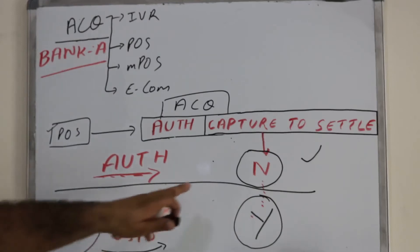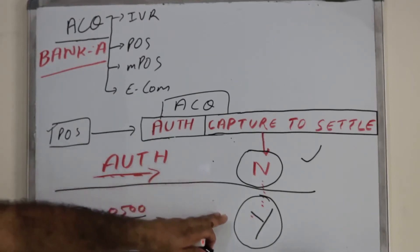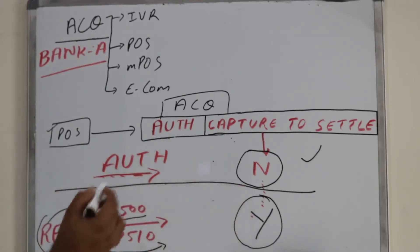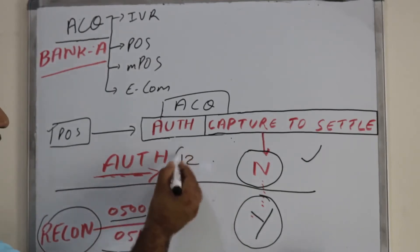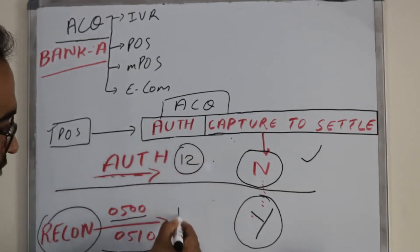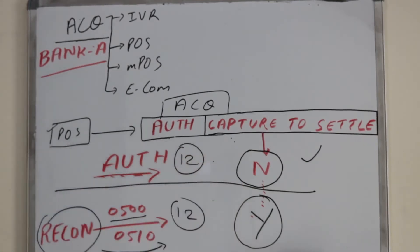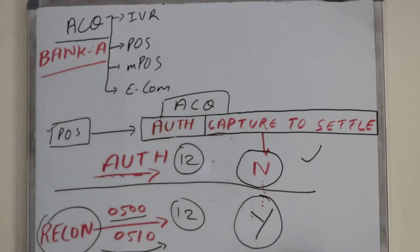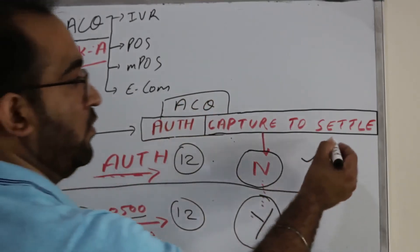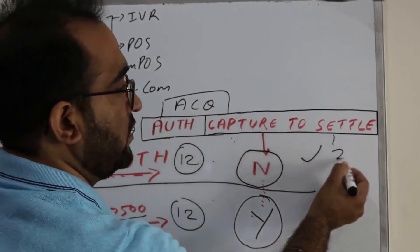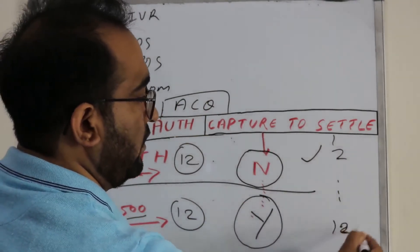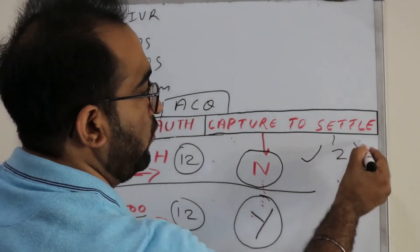Then they will change the flag to Y. If there are 12 transactions in this batch, the acquiring bank will take all 12 transactions and mark the flag to Y.